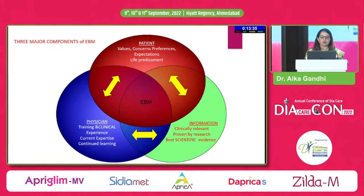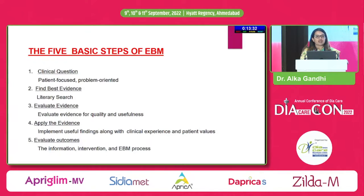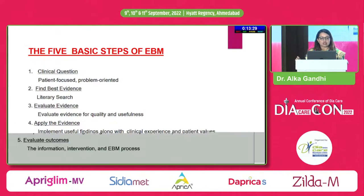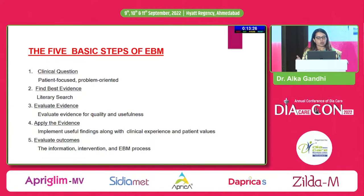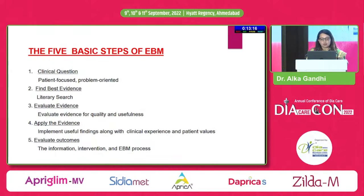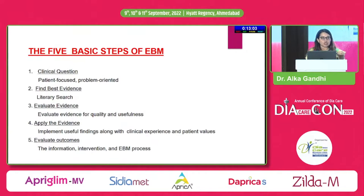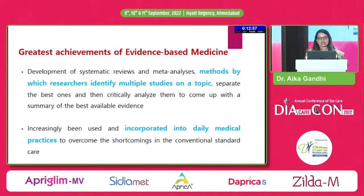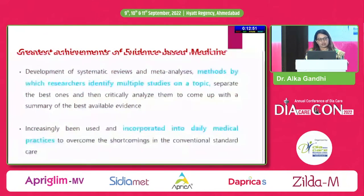The five steps to practice EBM are: first, a patient-focused and problem-oriented clinical question; second, find the best evidence through literary research; third, evaluate the evidence for quality and usefulness; fourth, apply the evidence along with experience and patient values; and fifth, evaluate the outcome. These steps lead to systematic reviews and meta-analyses.